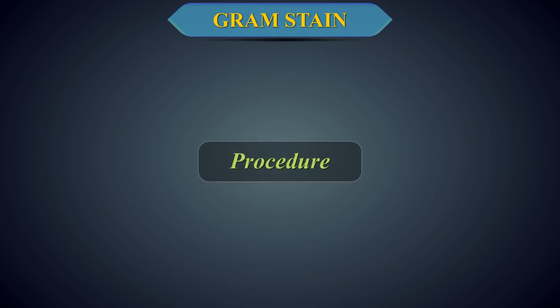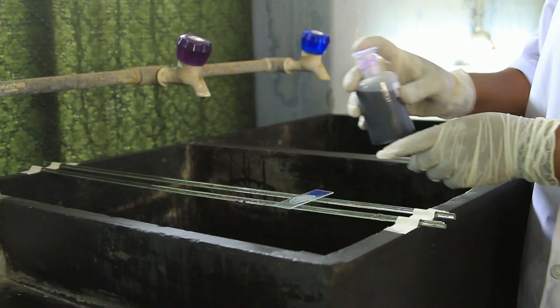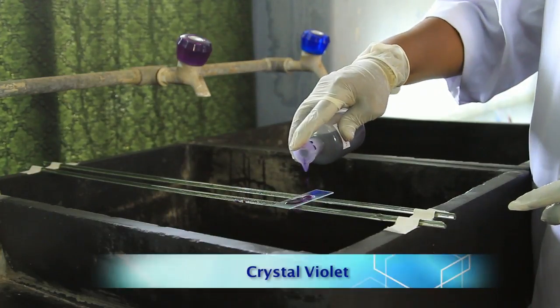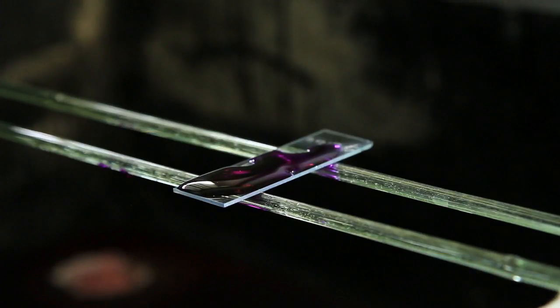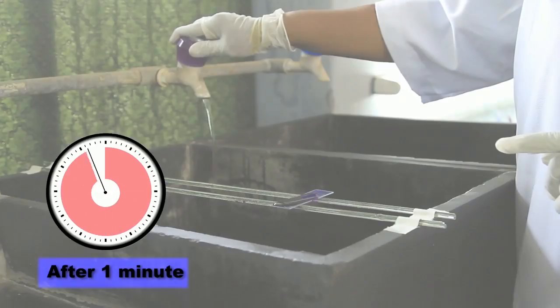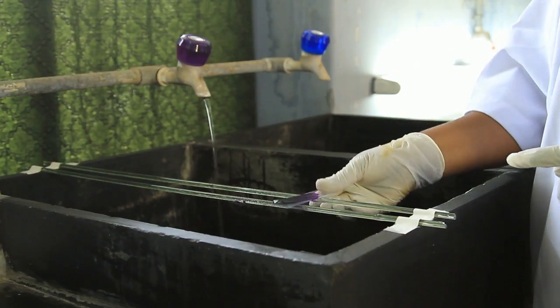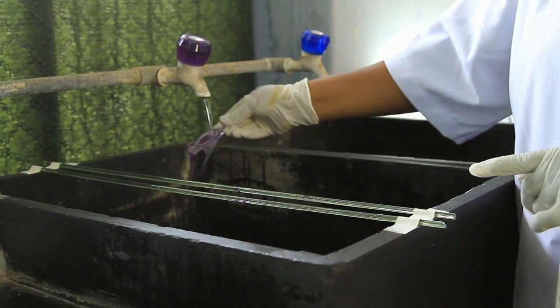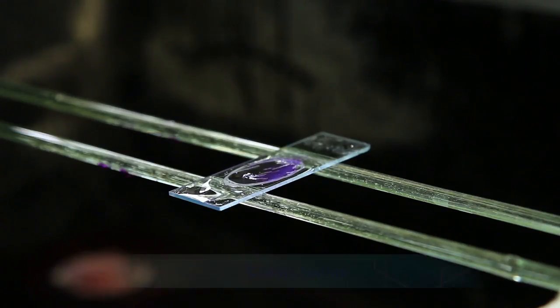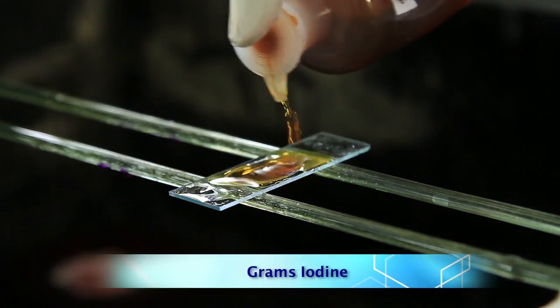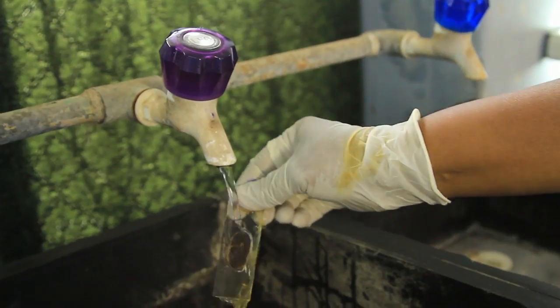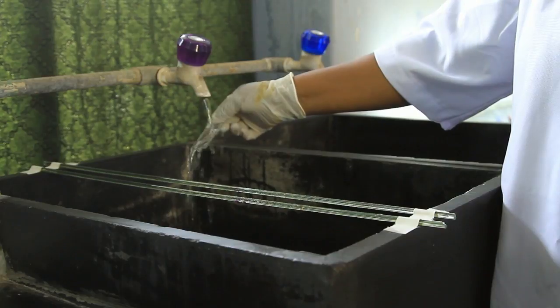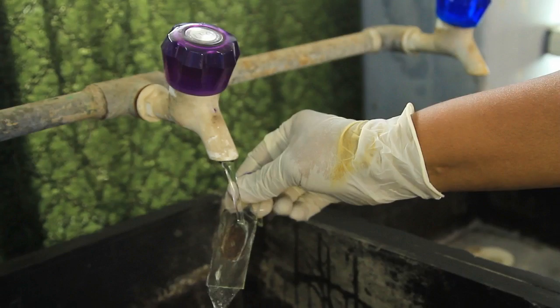Procedure. Place slide with heat fixed smear on staining tray. Gently flood smear with crystal violet and let it stand for one minute. Tilt the slide slightly and rinse with gentle stream of tap water. Gently flood the smear with Gram's iodine and let it stand for one minute. Rinse with a gentle stream of tap water. The smear will appear as a purple circle on the slide.